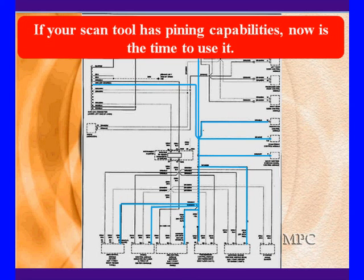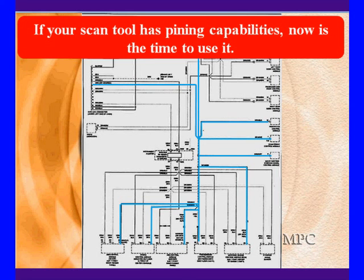If you have zero volts at the DLC — the data link connector — any one of these modules can be pulling it low, or you could have an open circuit. Go to the most convenient module you can get to and see if you've got 12 volts there. With no communications, we've got to have 12 volts there. If you do have 12 volts, you've got an open back to the diagnostic connector. If you don't, you've got to disconnect each one of these modules to find out which one is pulling it low. Diagnostics are simple in concept, but the execution is complex. Do not attempt to diagnose this type of situation with a one-hour diagnostic time — it can't be done.